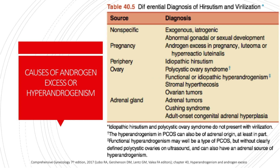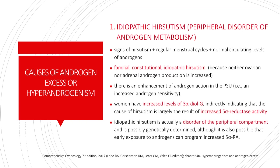This is a table showing the differential diagnosis of hirsutism and virilization — basically the causes of androgen excess or hyperandrogenism among women. First, let's talk about idiopathic hirsutism or the peripheral disorder of androgen metabolism. Idiopathic hirsutism is diagnosed when there are signs of hirsutism and regular menstrual cycles in conjunction with normal circulating levels of androgen, both testosterone and DHEAS. Because this disorder is frequently present in several individuals in the same family, particularly those of Mediterranean descent, it has also been called familial or constitutional hirsutism. Because neither ovarian nor adrenal androgen production is increased, the cause of the androgen excess has been called idiopathic hirsutism.